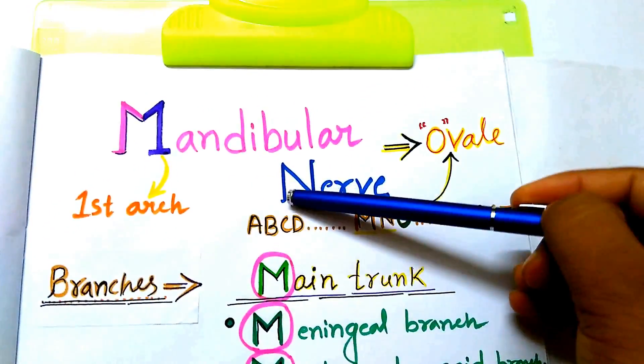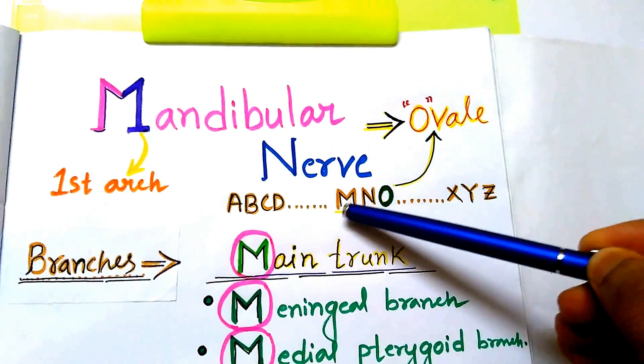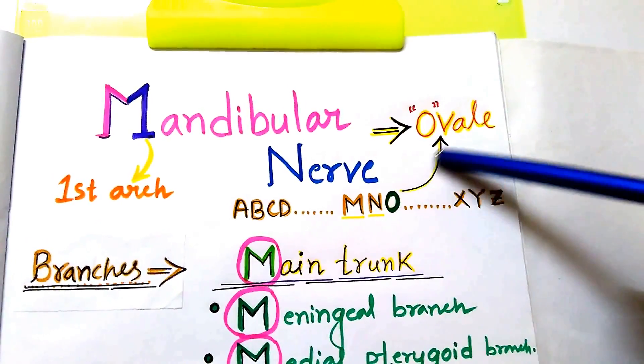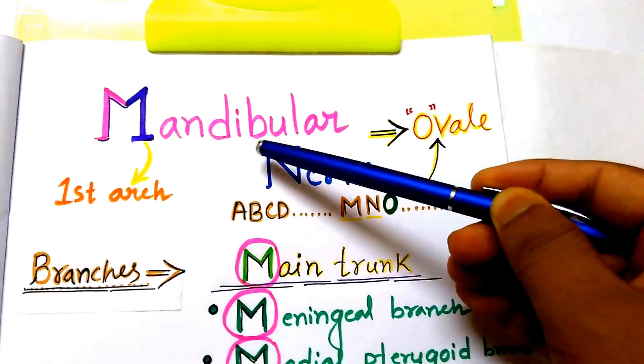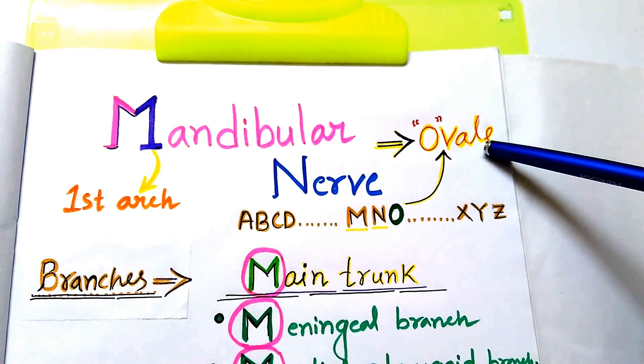Mandibular nerve M and N. In the alphabetical sequence after M and N comes O. O for oval, that is foramen ovale. Mandibular nerve leaves the cranial fossa by passing through foramen ovale.